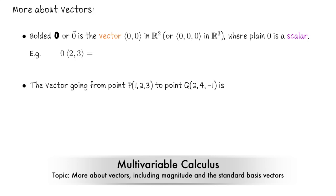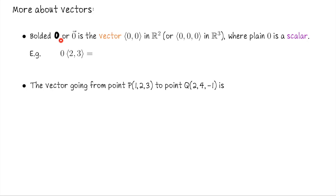In this lecture we're going to look more at vectors. First, I want to make sure that everyone's aware that the symbol zero could mean two different types of objects, so we want to be really precise about what we mean when we write zero. In a book, a bolded zero, or by hand zero with an arrow hat over it, is the vector whose coordinates are all zero. If you write just plain zero, that's a scalar — a different type of object.